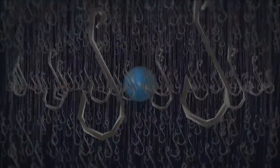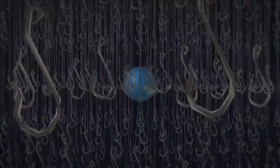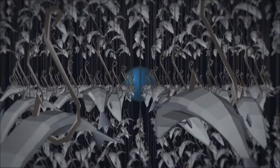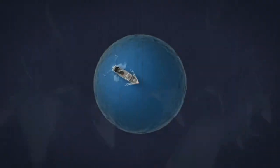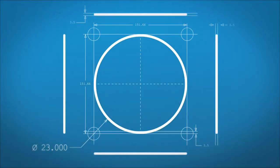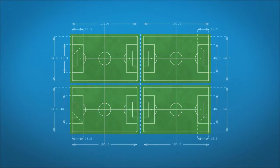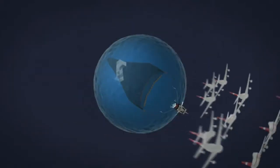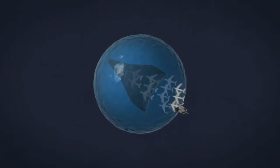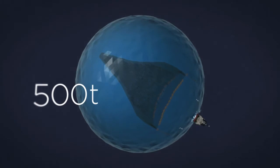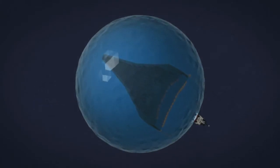There are trawling vessels that cast nets with an opening of up to 23,000 meters squared, the size of four football pitches and big enough to hold 13 jumbo jets, or more commonly, more than 500 tons of fish.